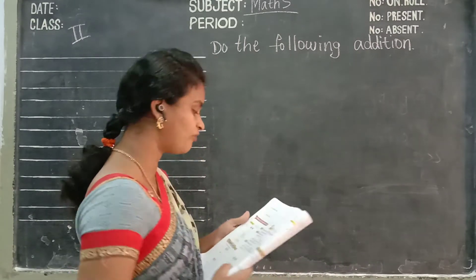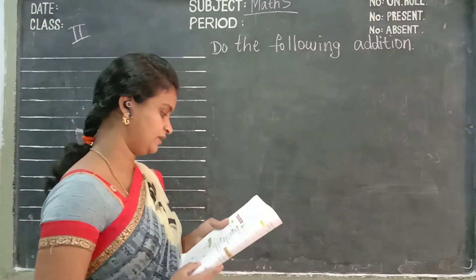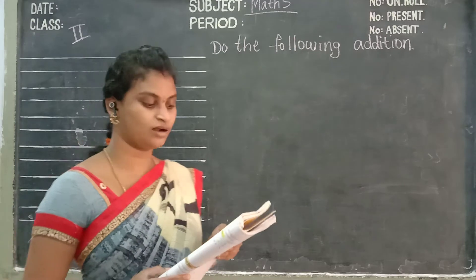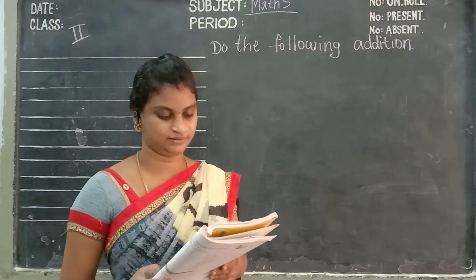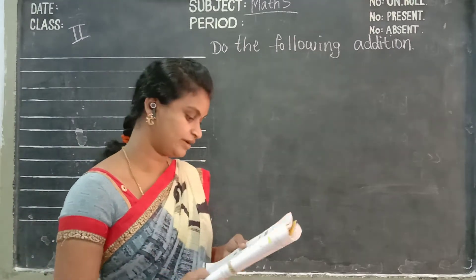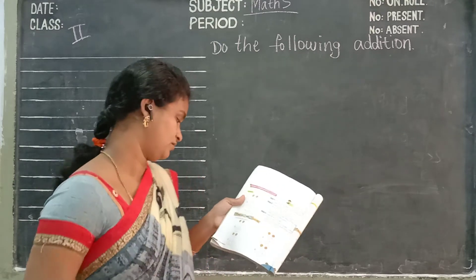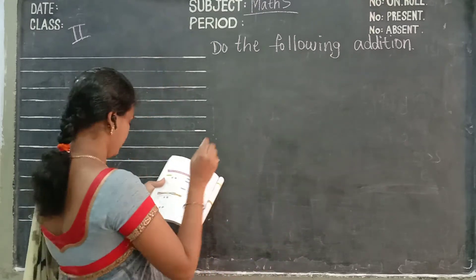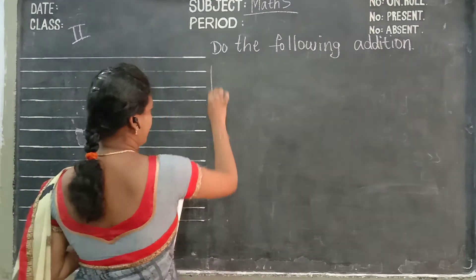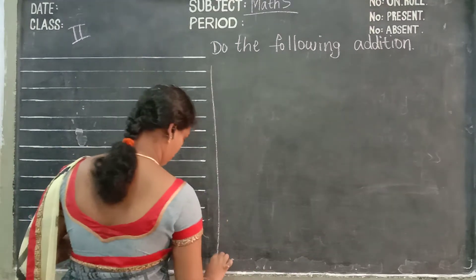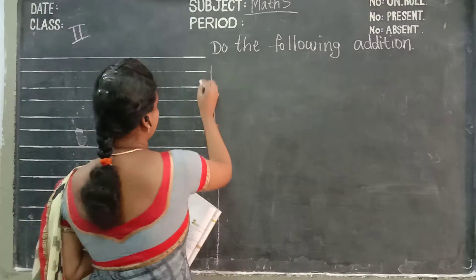See, do the following addition. Addition of two-digit numbers by carrying. The example is given, see here. Do the following addition, A. I explain you now.